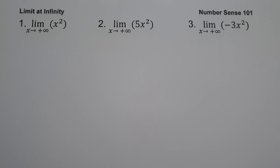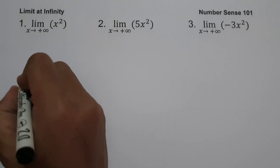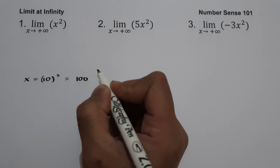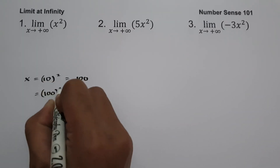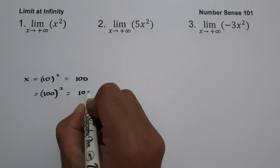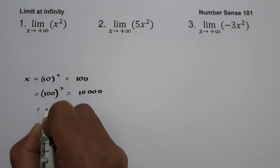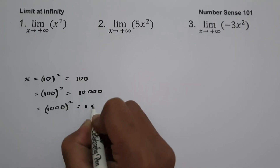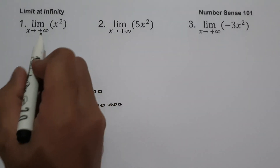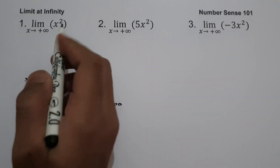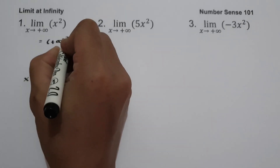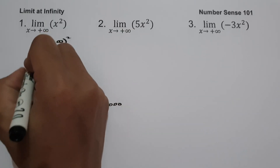On the first example, what is the value of the limit of x squared as x approaches positive infinity? For example, if x is equal to 10 and we square it, we get 100. If x is 100, then 100 squared is 10,000. If x is 1,000, then 1,000 squared is 1,000,000. So if we substitute x equals positive infinity into the expression, positive infinity squared gives us positive infinity.